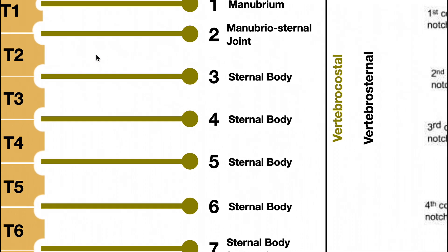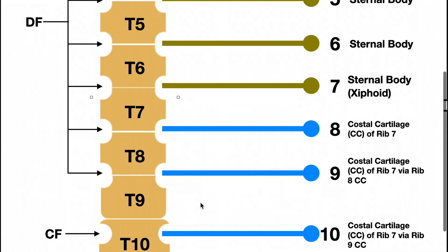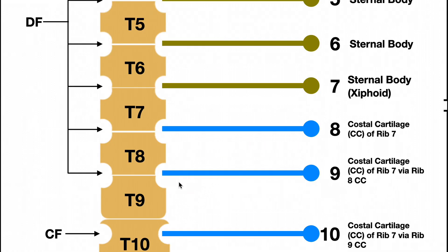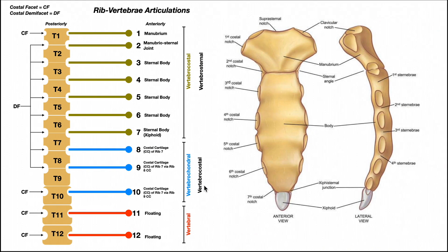For example, rib 2 articulates with demi-facets, with the top part contributed by T1 and the bottom by T2 — so rib 2 articulates between T1 and T2. Rib 3 articulates between T2 and T3, rib 4 between T3 and T4, and this pattern continues through rib 9, which in most individuals articulates with both T8 and T9. Ribs 2 through 9 articulate with demi-facets rather than complete costal facets.